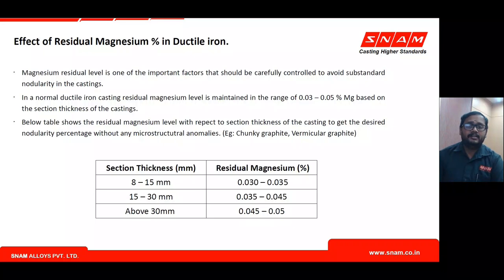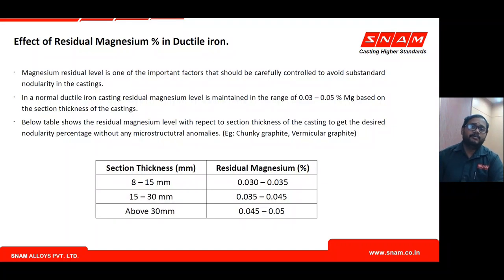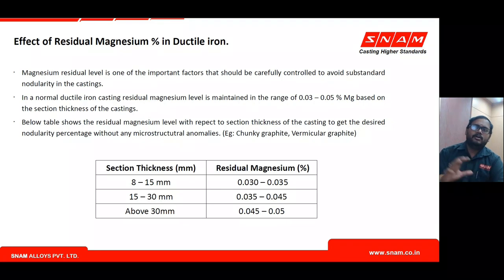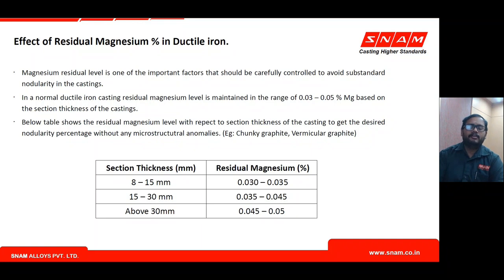However, increasing residual magnesium beyond a certain extent causes inverse carbide, chunky graphite, and exploded graphite defects. Therefore, residual magnesium requirements and alloy magnesium content should be selected on a casting-specific basis rather than a single foundry-wide target, since different castings have different section thicknesses and cooling rates.